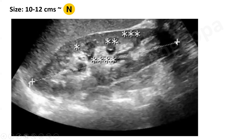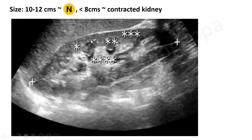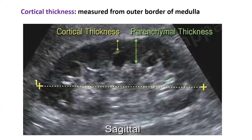When you look at the kidney size, we look at the longitudinal size when we measure it. The normal size is around 10 to 12 centimeters. If the kidney size is less than 8 centimeters, it is considered a small or contracted kidney. So the first thing is we look at the renal size.